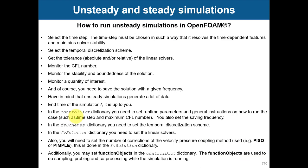To run unsteady simulations in OpenFOAM, what we need to do is select the time step. The time step must be chosen such that it resolves the time-dependent features and maintains solver stability related to the CFL number. You also need to select the temporal discretization schemes, set your tolerances for the linear solvers, monitor your CFL number, and monitor stability and boundedness of the solution.